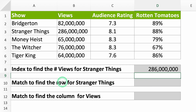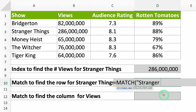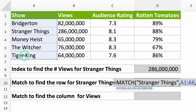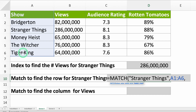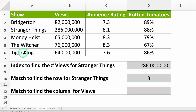So to find the row number for Stranger Things, you just need to type equals MATCH. It will ask you for three things: 1. What you are searching for — type Stranger Things. 2. Where should it look — look in the list with all the show names. 3. The match type — we want an exact match, so type 0. Close your formula and press Enter. It says row 3.